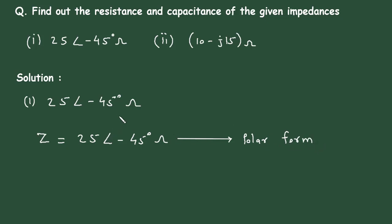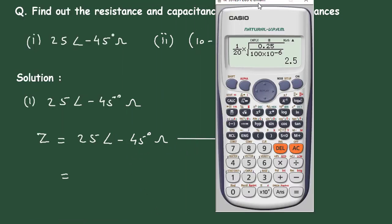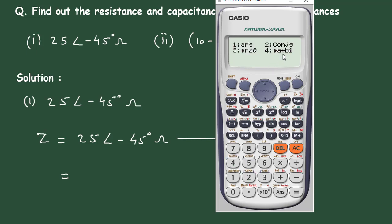Now we have to find the value of resistance, so let's convert this polar form into its equivalent rectangular form. We can directly convert using a calculator. First we have to keep the calculator in complex mode: shift or mode, then 2. Now convert 25 at angle minus 45 using shift, then 2, then 4.